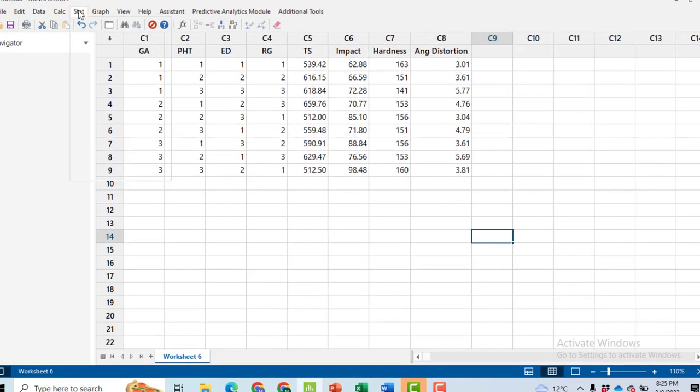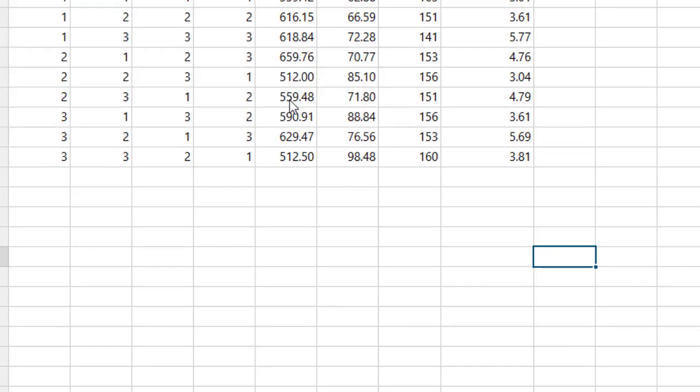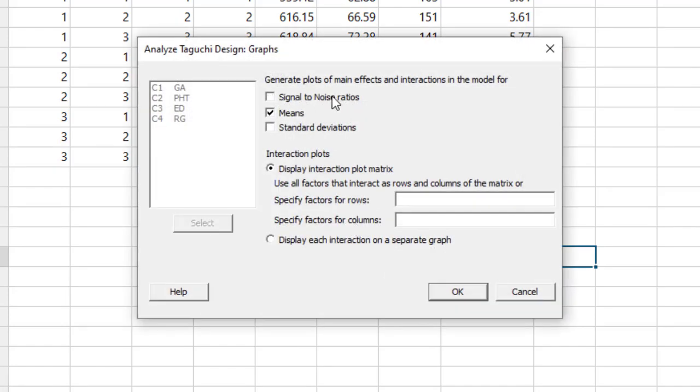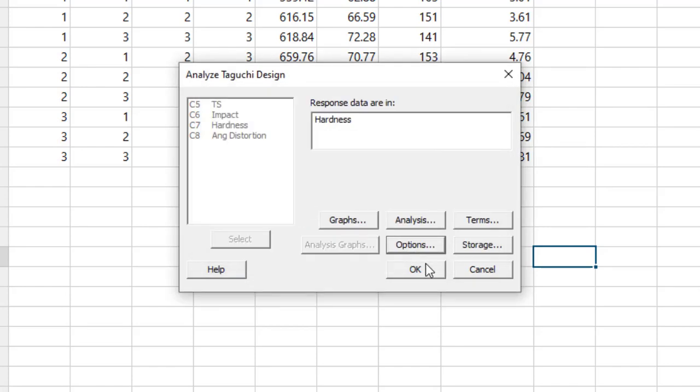First go to Stat, then DOE, Taguchi, Analyze Taguchi Design. Select the response variable - I want to minimize the hardness. Go to the graph, select signal to noise ratio and means, click OK. Then click on Options. Here you will have to select that we want to minimize smaller is the better. Click on smaller is better, then click OK.